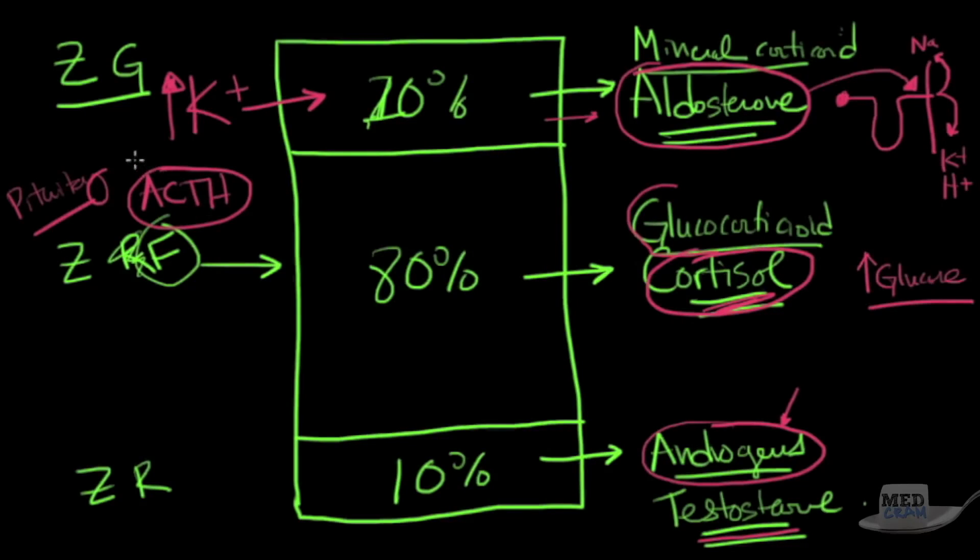ACTH is a peptide or amino acid protein hormone that is secreted from the pituitary. There's also a little fragment that is made as well that has, as part of it, something called melanocyte stimulating hormone. We'll talk about that in a little bit. What stimulates this? Again, ACTH.